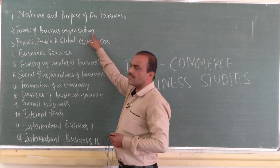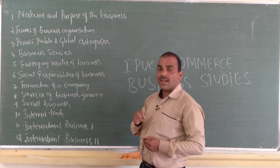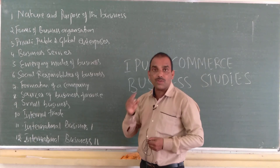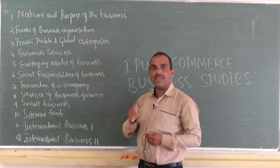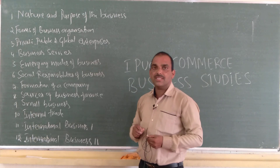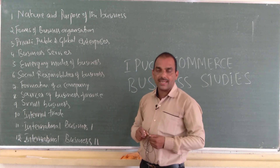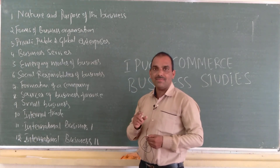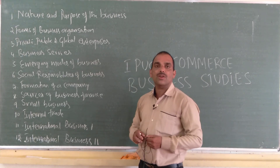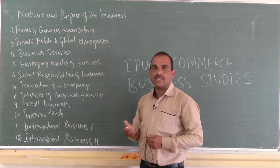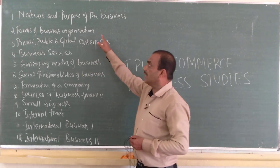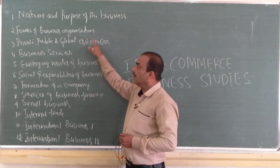The second chapter is Forms of Business Organization. Here we are going to study the various forms of business. It may be one-owner business, which is called sole trading concern, or it may be a partnership firm — a collective ownership of two or more persons — or it may be a joint stock company, cooperative society, or other various forms of business organization.